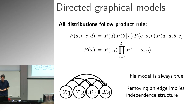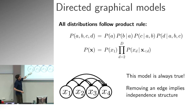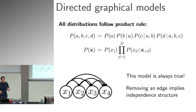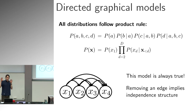Where graphical models actually tell you something interesting is where some arrows don't exist. If you remove arrows — equivalently, cross out terms in the conditioning — you're saying something interesting. For example, if when generating C you only need to look at A and can remove B, that removes the arrow from B to C. Once you have a non-trivial graphical model, you can then ask: what does this tell me that isn't generally true?